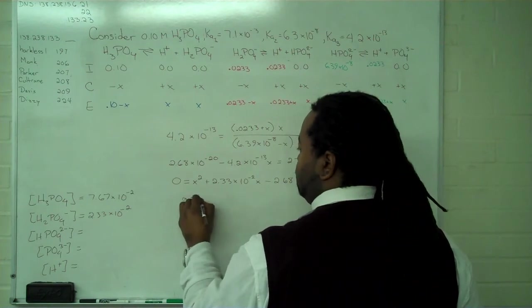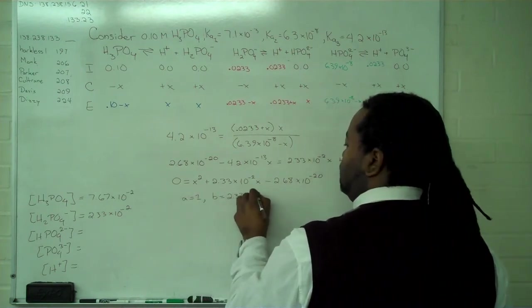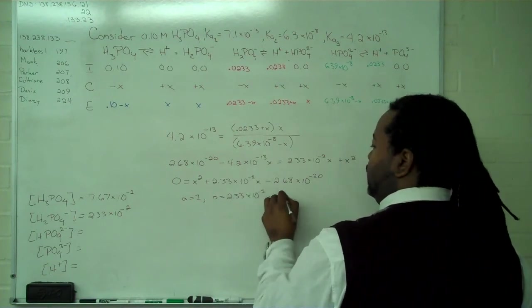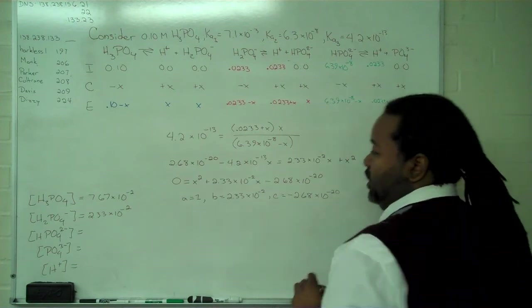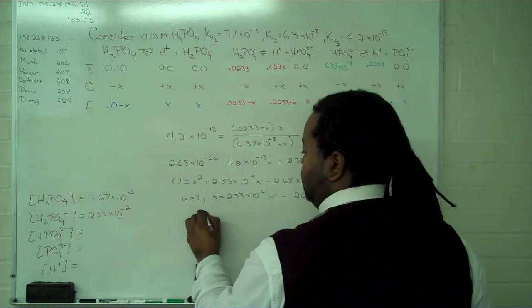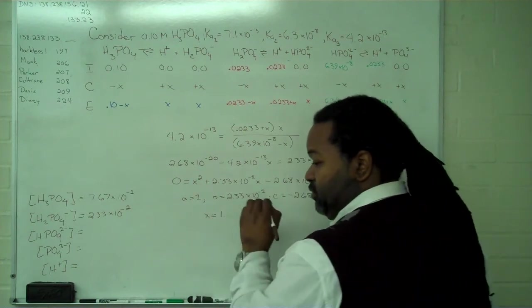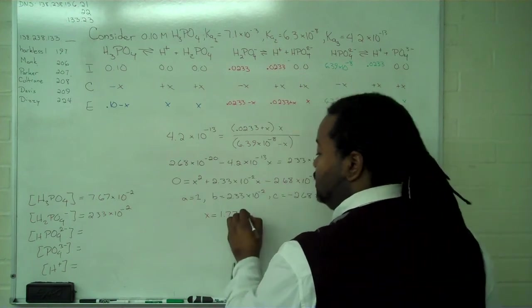This gives us a equals 1, b equals 2.33 times 10 to the minus 2, and c equals negative 2.68 times 10 to the minus 20.